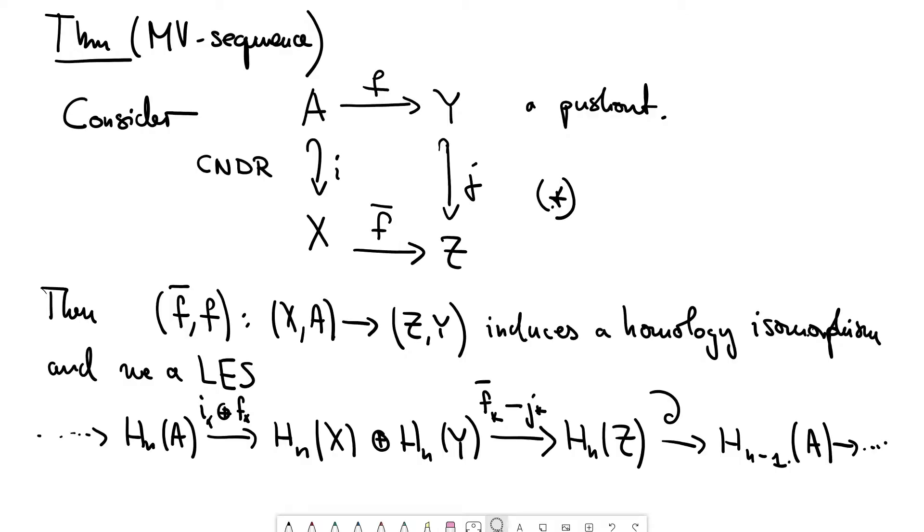So in this version of the Mayer-Vietoris sequence, we have a pushout of spaces. Additional assumption is that the vertical maps are closed inclusions and even more the map i is required to be a closed neighborhood deformation retract.